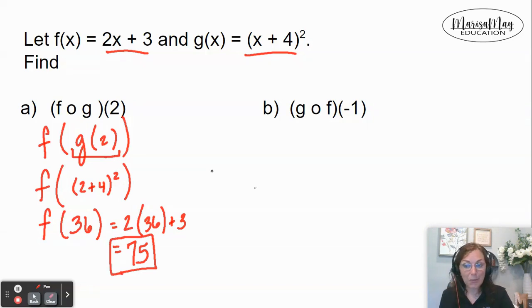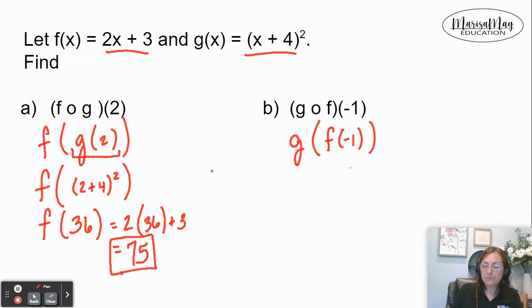Now let's do it the other way: g of f of -1. Again, I'm going to rewrite it as g of f of -1, and we begin on the inside. So the inside tells me to replace the x in the f function with -1.